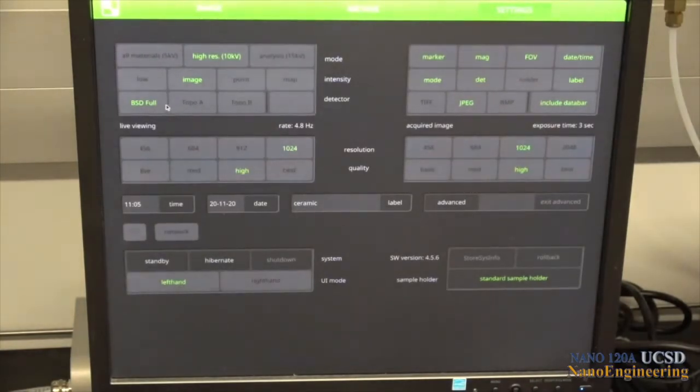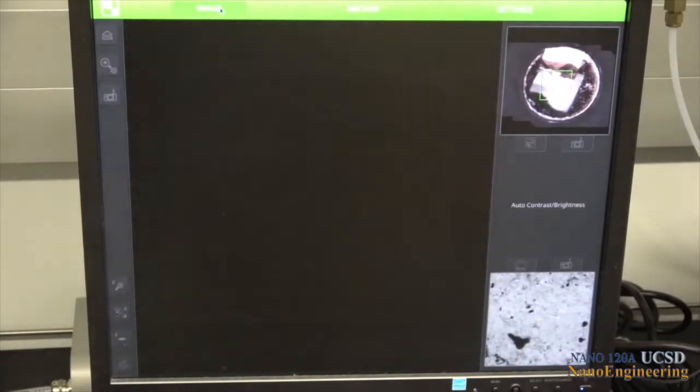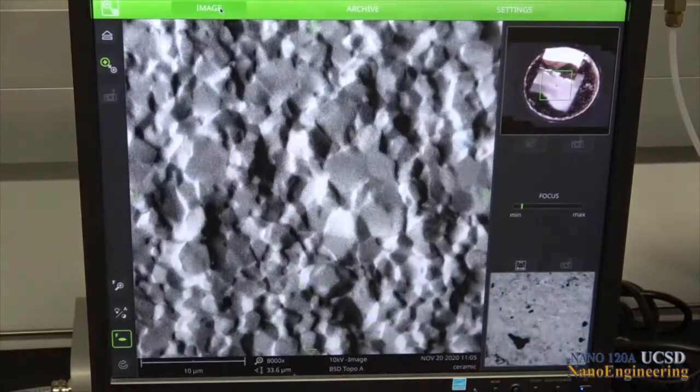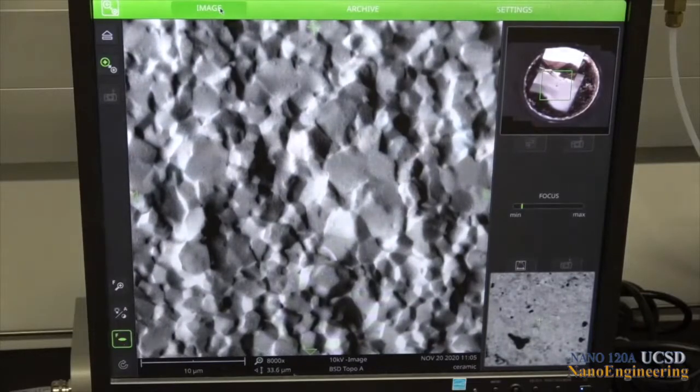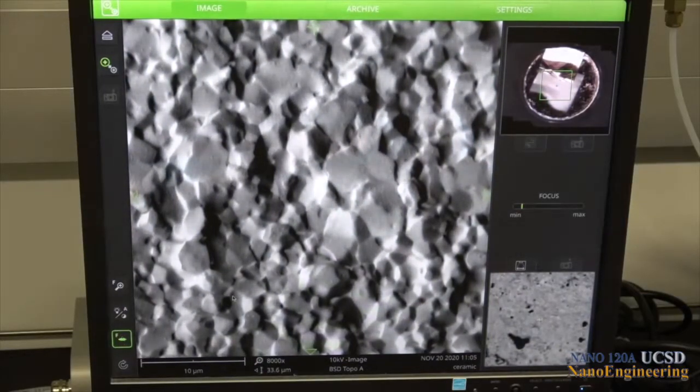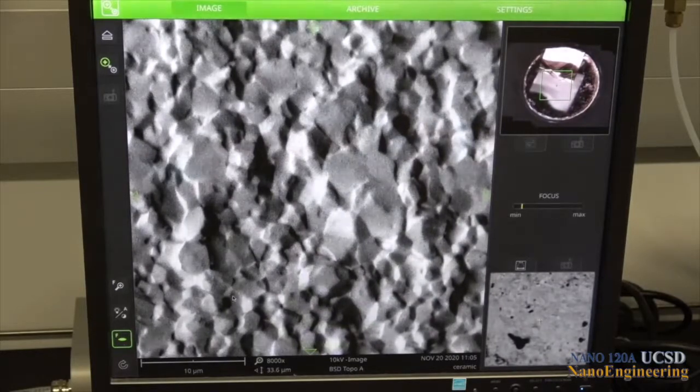To view the same surface in a topographic contrast mode, we can go back to our settings menu and in the detector portion, choose topo A and then click on image at the top left of the screen. A topographic image of the surface is observed from turning off certain segments of the backscatter detector.